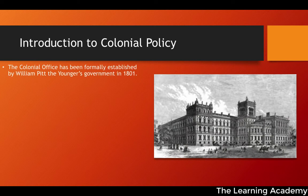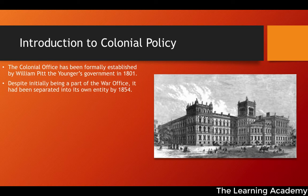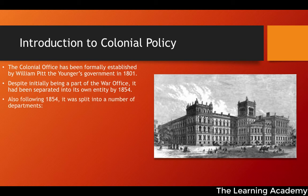As an introduction to colonial policy, when talking about the way the empire was administered, we're talking about the colonial office. The colonial office was established by William Pitt the Younger's government in 1801. Despite initially being part of the war office, it had been separated into its own entity in 1854. Following 1854, it was split into a number of departments as the empire was growing in size.